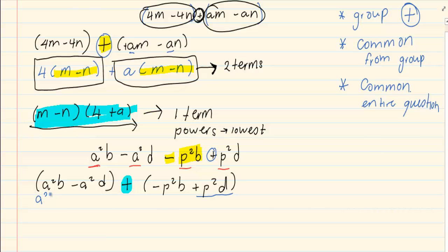The next step is to take out a common from each group. In the first group, we've got a squared and we're left with b minus d. In the second group, I'm going to take out a minus, minus p squared. Now, when you take out a minus, the signs change.